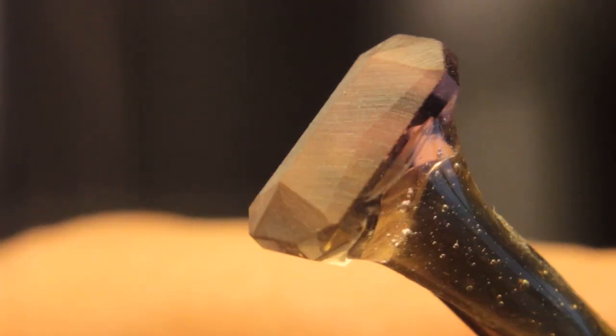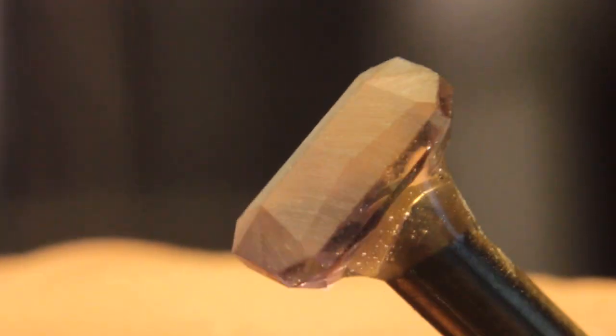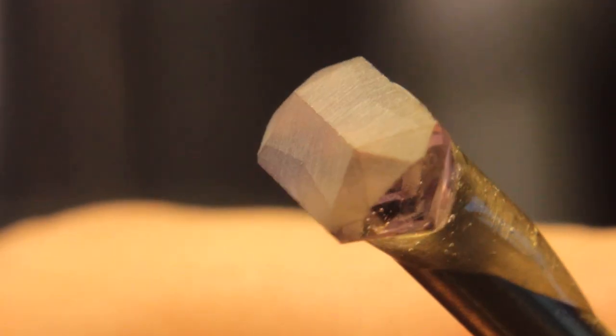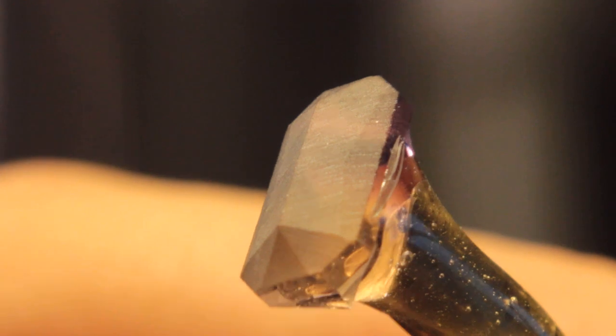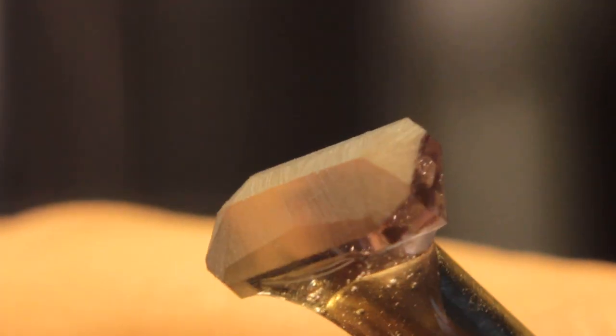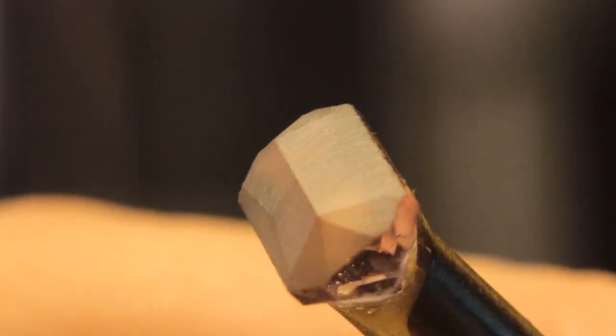So now I'll use the 600 grit diamond grit and go over this again. And then my 12M. And again, since it's a small stone, I'll probably be able to go to polish right after that. But we'll see.